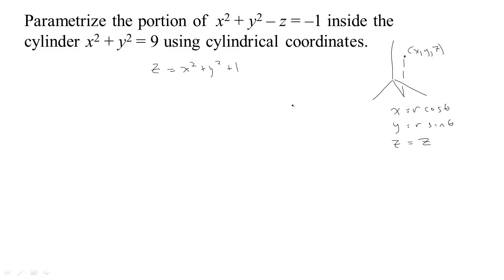Since x is r cosine theta and y is r sine theta, x squared plus y squared is r squared. So we basically have z equals r squared plus 1. That's the equation of this surface in cylindrical coordinates. Remember this is an elliptic paraboloid. So we can use these equations to get a parametrization: x is r cosine theta, y is r sine theta, and z is r squared plus 1.